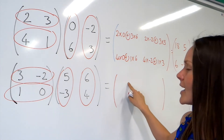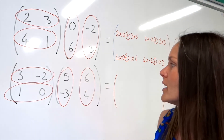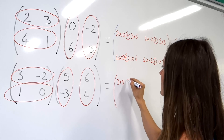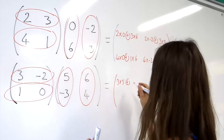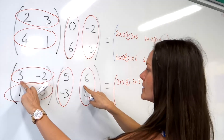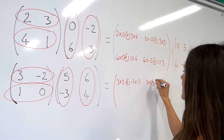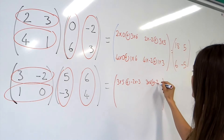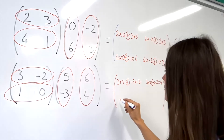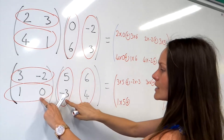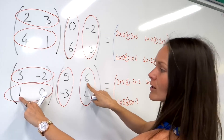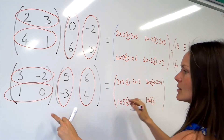To find the top left element in our matrix, we use the top row and the left column. So we're doing 3 times 5 plus minus 2 times minus 3. For the top right, use the top row and the right column: 3 times 6 plus minus 2 times 4. For the bottom left, use the bottom row and the left column: 1 times 5 plus 0 times minus 3. And for the bottom right, 1 times 6 plus 0 times 4.